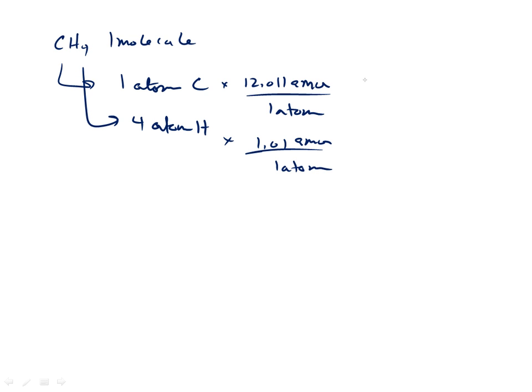So if we multiply this out, we get 12.011 atomic mass units and 4 times 1.01 is 4.04 atomic mass units. If we add those together, we get 16.051 atomic mass units.